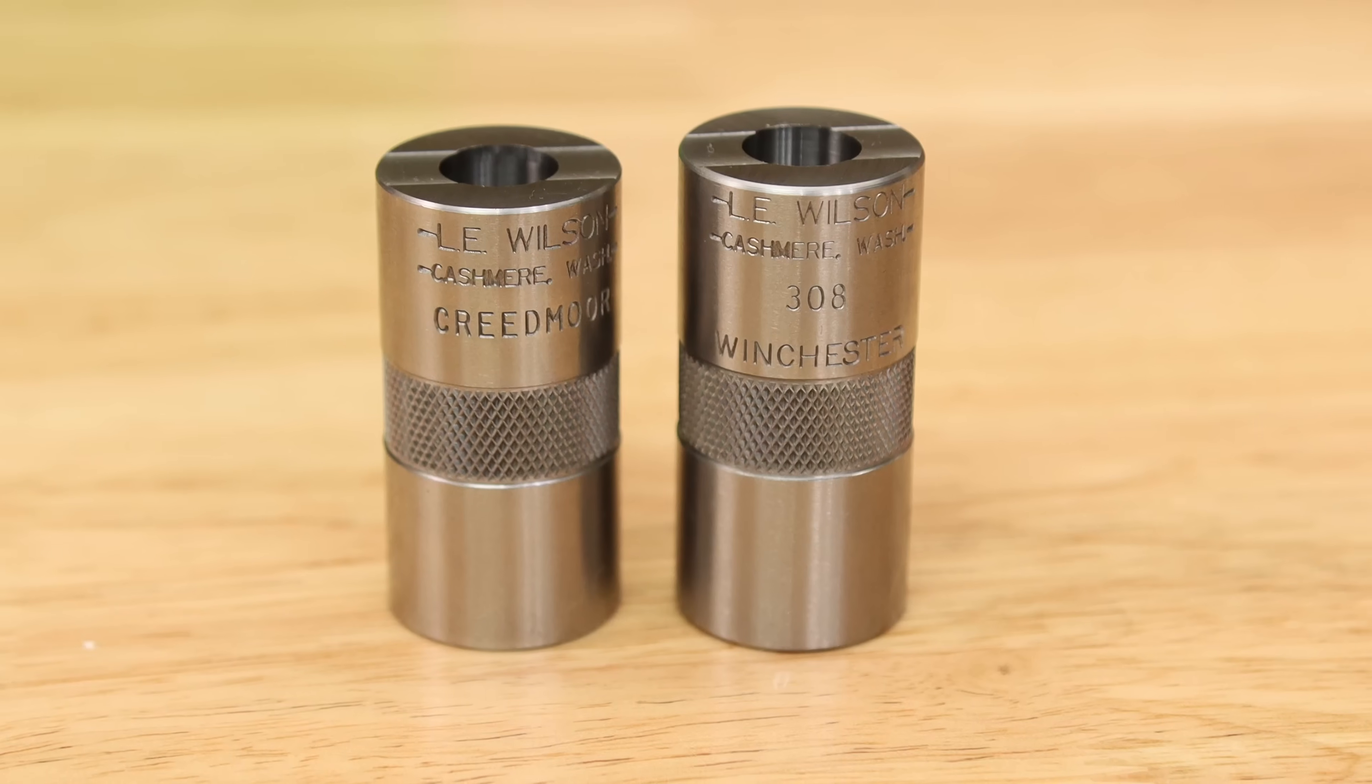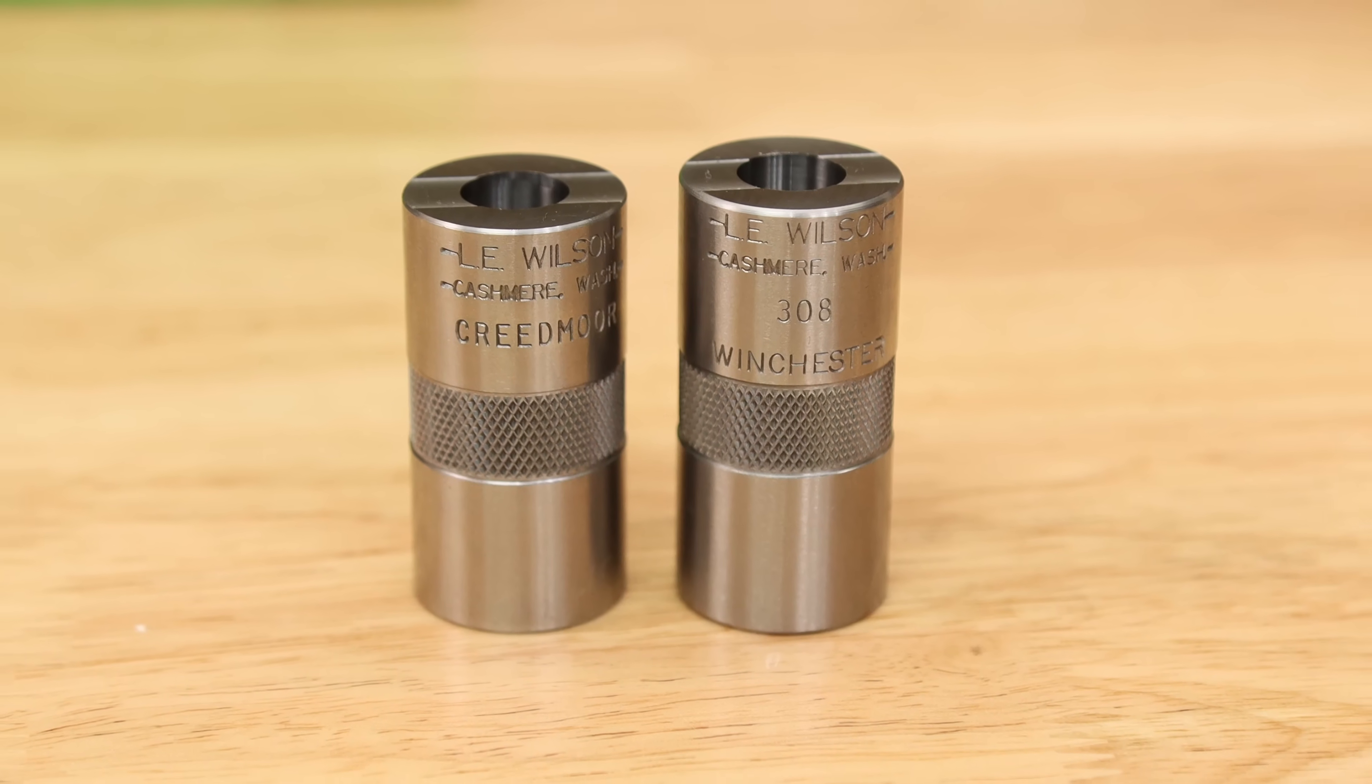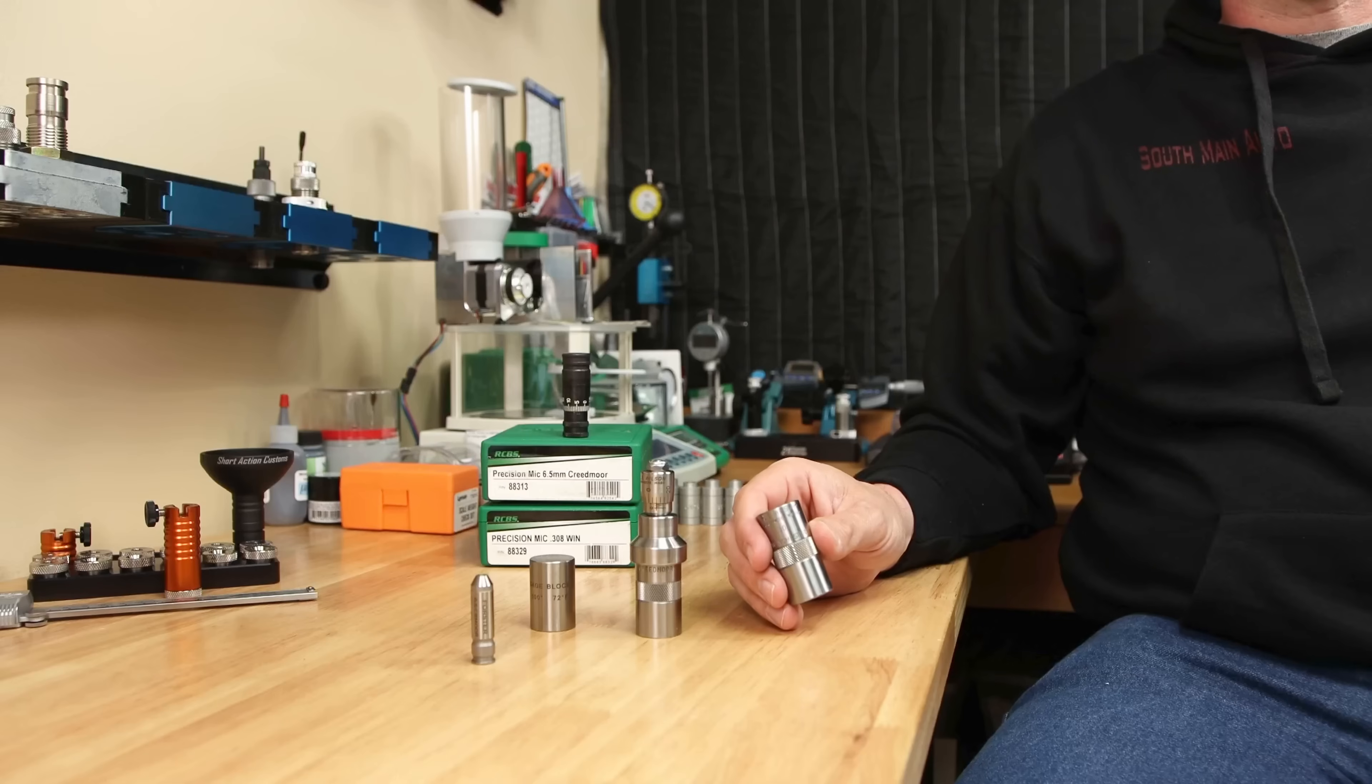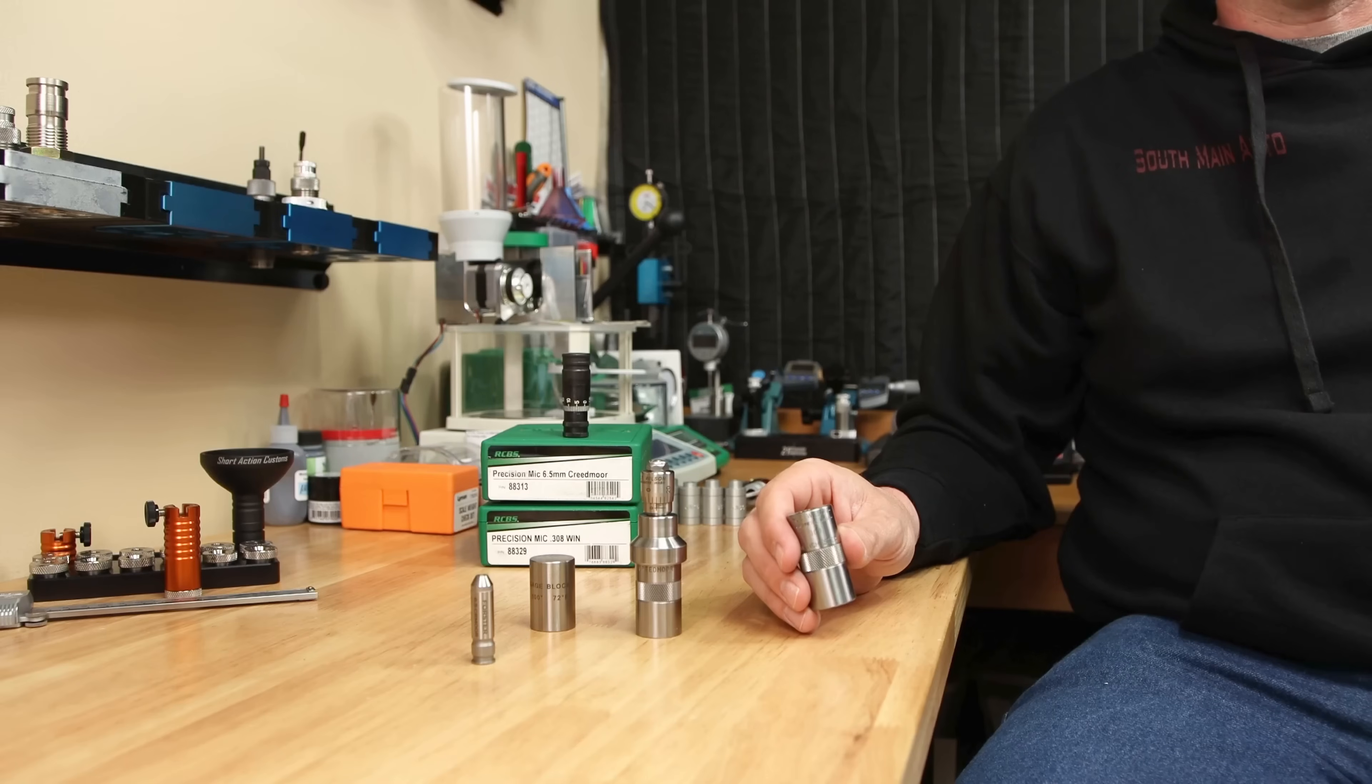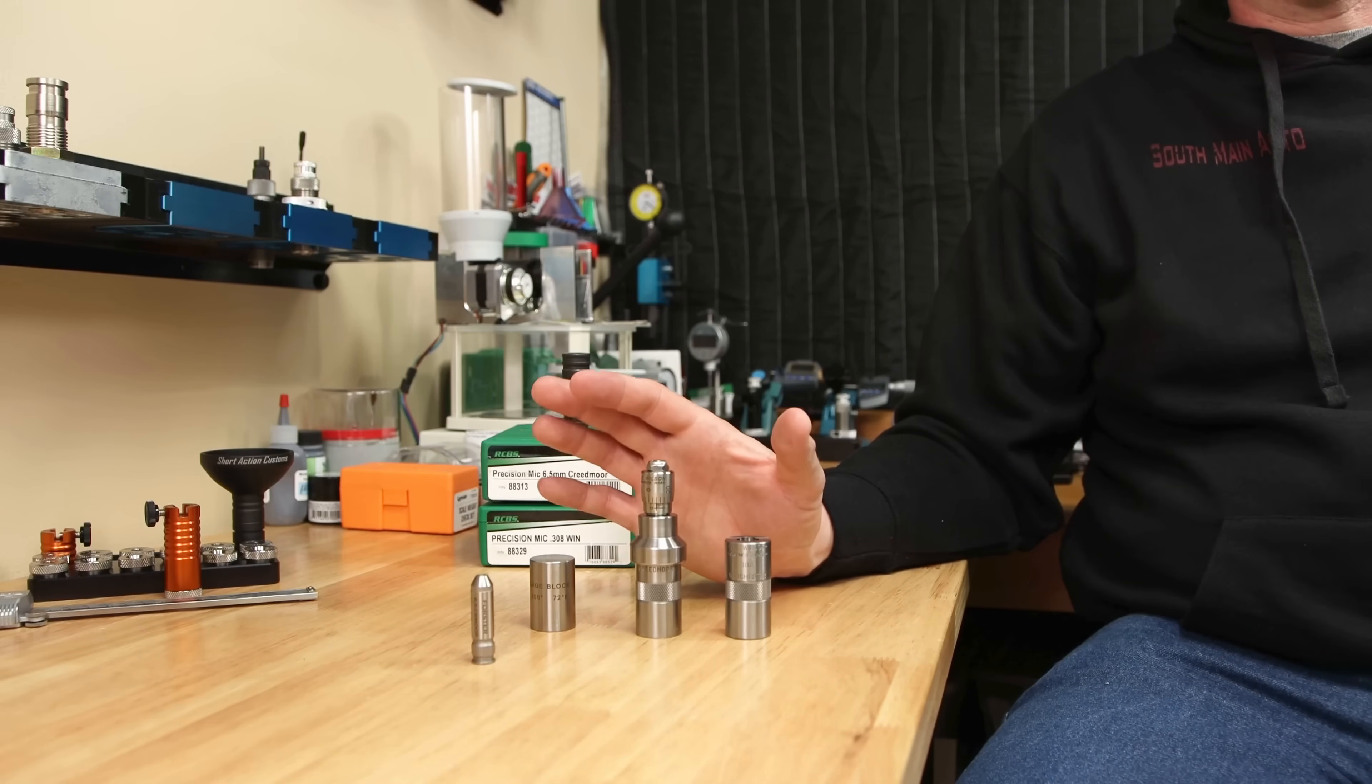You do have to have case gauges for every caliber you intend to measure. They're not ridiculously expensive. Some are in the ballpark of $35-ish depending on the caliber. Personally, I'm not a huge fan of having these gauges by themselves, but if you are, I really do understand why. But overall, this system works pretty well.